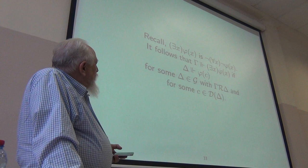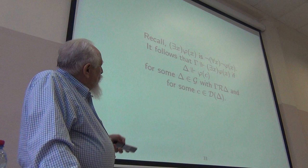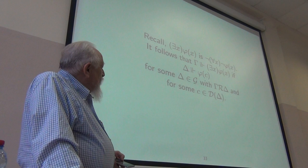I defined exists to be not for all not, and what this gives you is exists x phi of x is true at gamma if there's some accessible world and something in the domain that this formula is true of at that world.